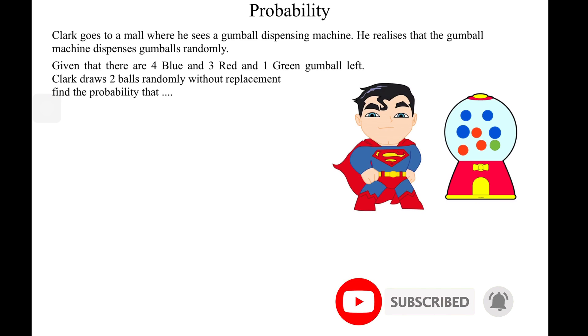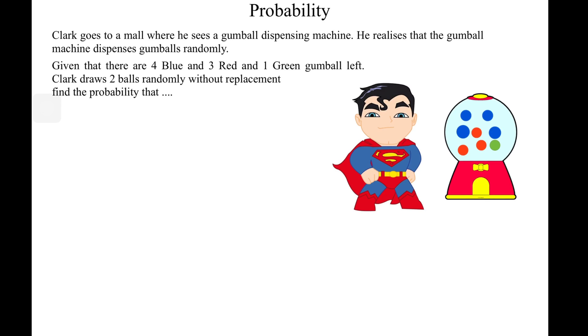Here I've set up a scenario: Clark goes to a mall where he sees a gumball dispensing machine. The machine dispenses gumballs randomly — meaning there's no specific order to it. Given that there are four blue, three red, and one green gumball left, Clark draws two balls randomly without replacement.